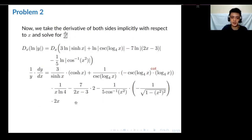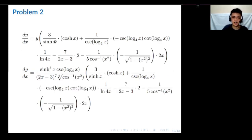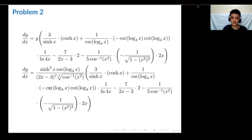After differentiating, we multiply both sides by y to isolate dy/dx. The cotangent is now corrected in the expression. We substitute y back with the original given function. The final answer is dy/dx equals the original function times the long expression we derived. Since no simplification is needed — and on exams it's usually the same — that's our final answer.